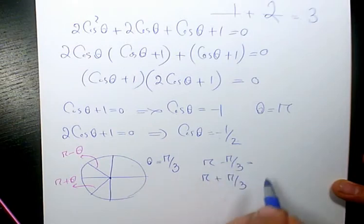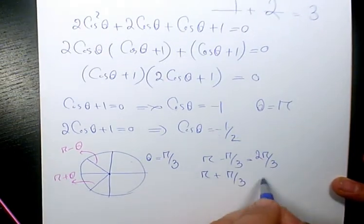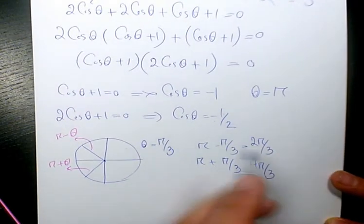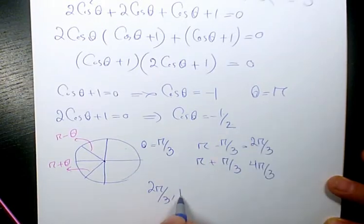So, pi minus pi over 3 is 2 pi over 3. Pi plus pi over 3 is 4 pi over 3. So, we have three answers: 2 pi over 3, pi, and 4 pi over 3. These are the three answers to this question.